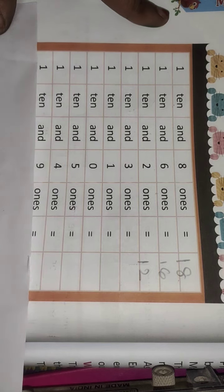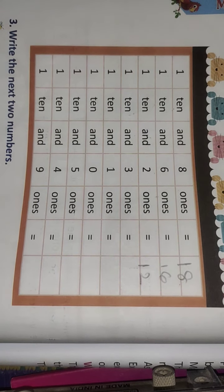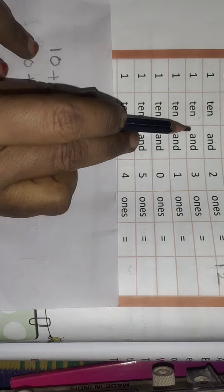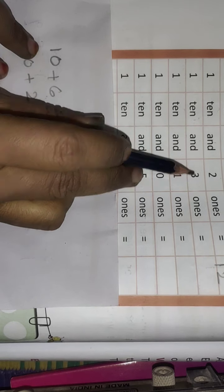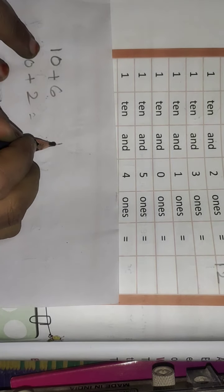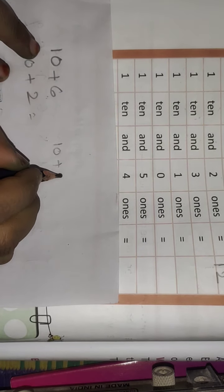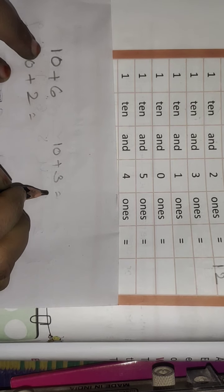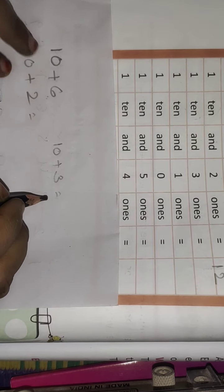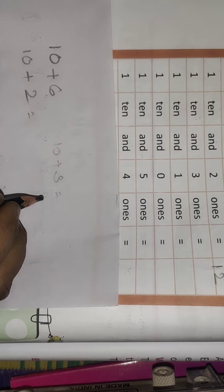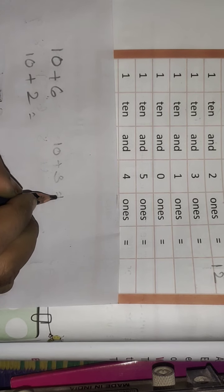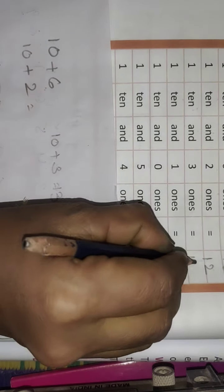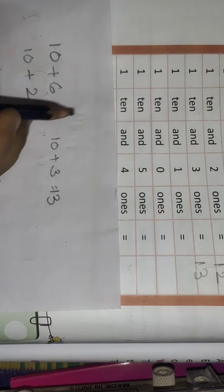Next — 1 ten and 3 ones. 1 ten equals 10, 3 ones equals 3. 10 plus 3 — take 3 fingers, count after 10: 11, 12, 13. Answer is 13.